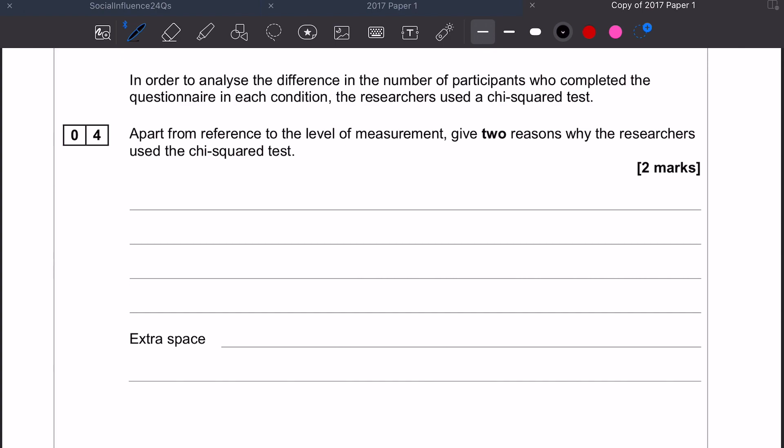If you want to draw out your statistical test table on your paper to help you work out why they've chosen a chi-squared, then by all means do that. Now, the use of chi-squared is appropriate for an unrelated test of difference using nominal data.